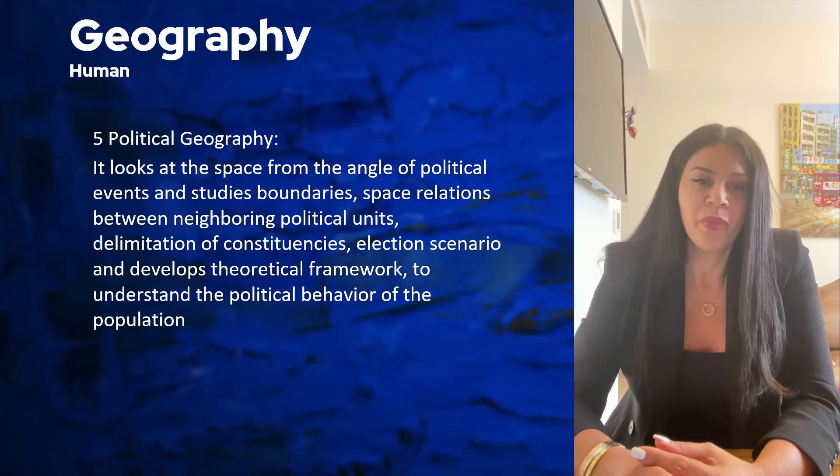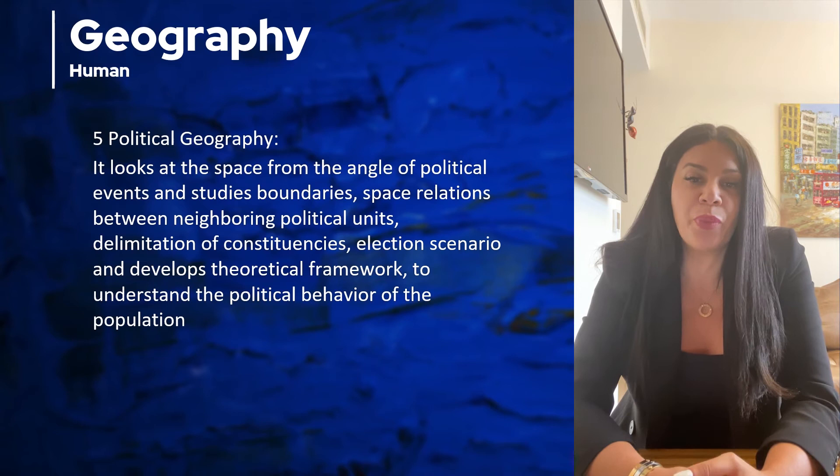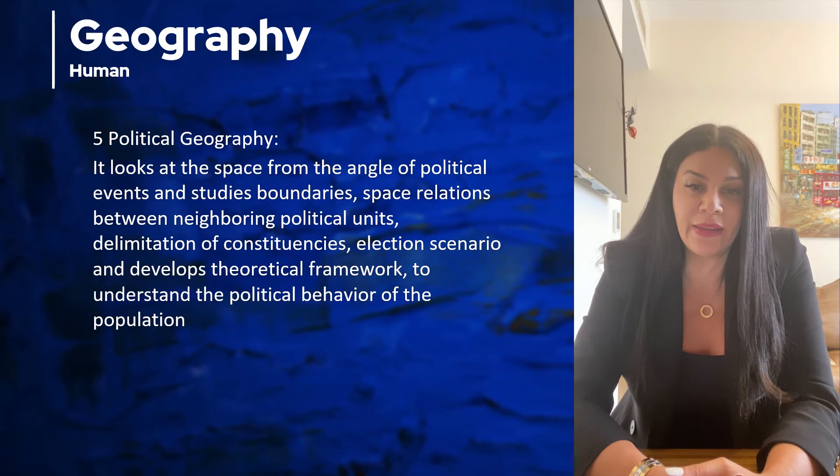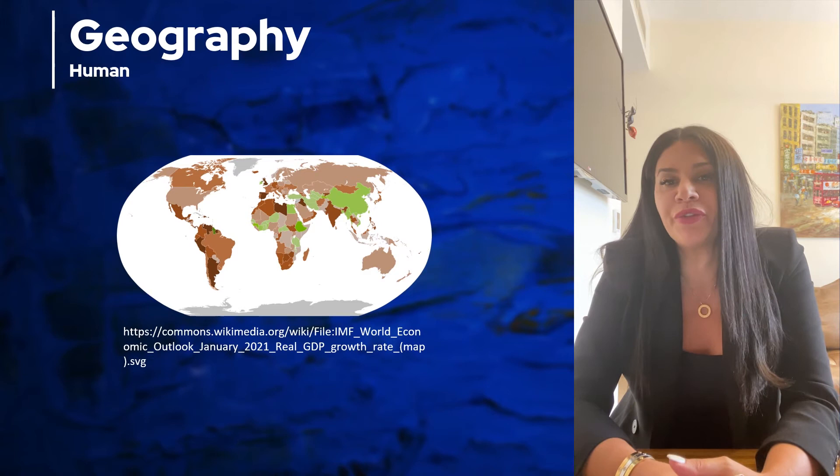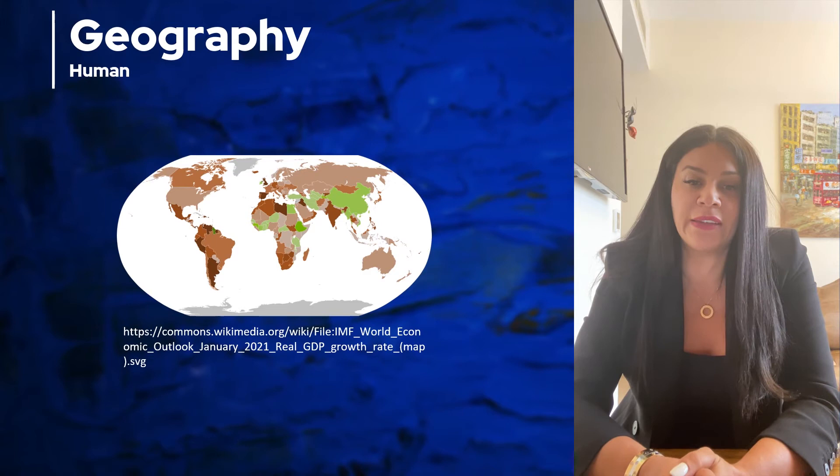We will move to the last topic of human geography: political geography. It looks at how political events take place at different places and how they determine the actual geography of a place. For example, if I want to build a dam, it depends on the different factors of the political events taking place in that actual region, and that will determine the geography of that place. So these are the five sub-branches of human geography.